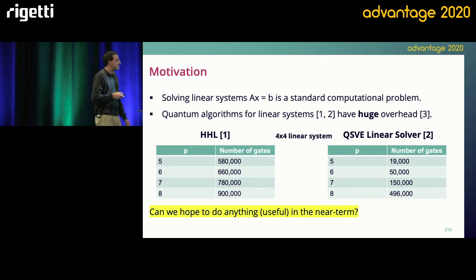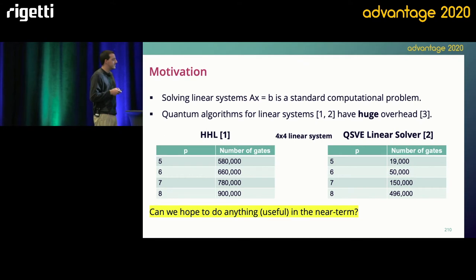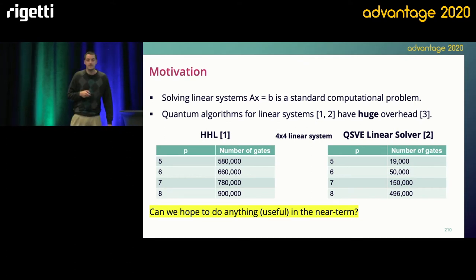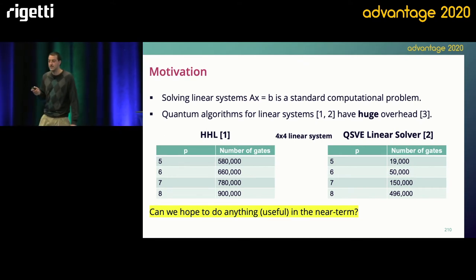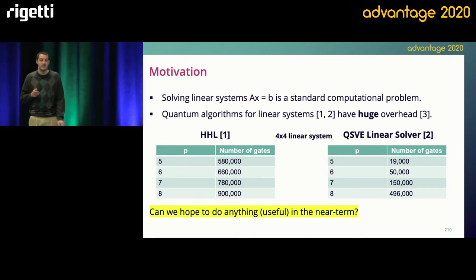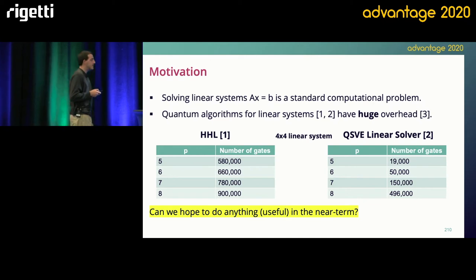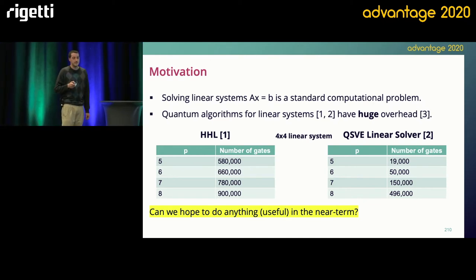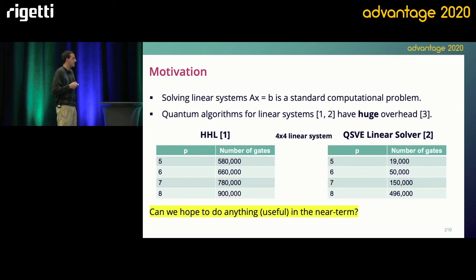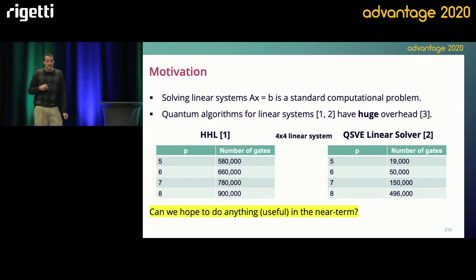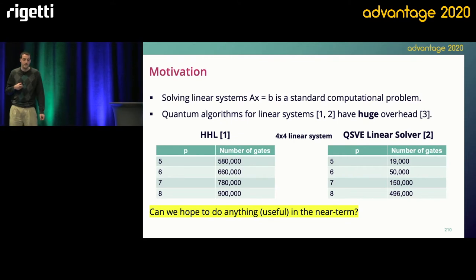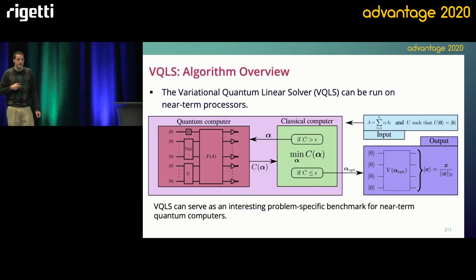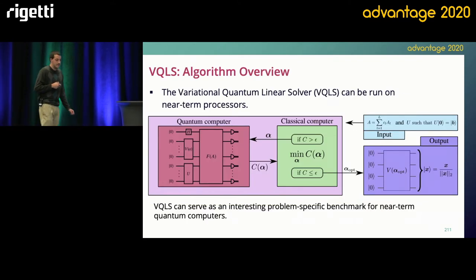Just to give you some idea, for a 4x4 linear system, both of these algorithms were implemented in IBM software Qiskit Aqua, and you can see for this system it's something like tens of thousands and hundreds of thousands of gates, even for this 4x4 linear system. So you could ask, can we hope to do anything useful in the near-term? And that's where VQLS comes in.